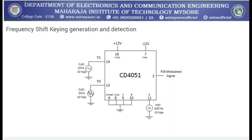The next experiment is frequency shift keying — its generation and detection. FSK is a digital modulation technique in which the frequency of the carrier wave varies according to the digital signal changes. It is a type of frequency modulation. The output of the FSK modulated wave is high in frequency for a binary high input and low in frequency for a binary low input.